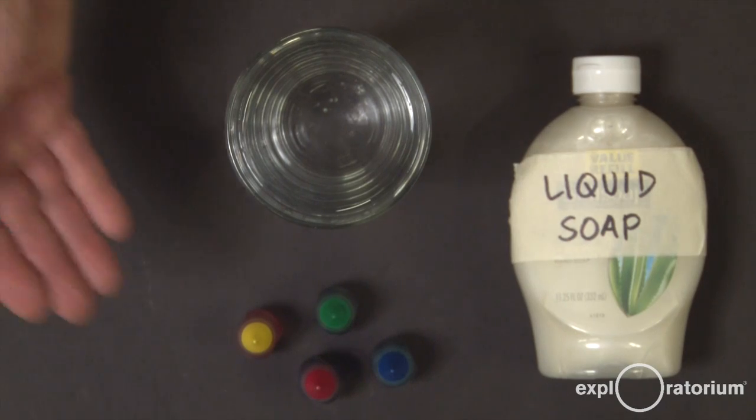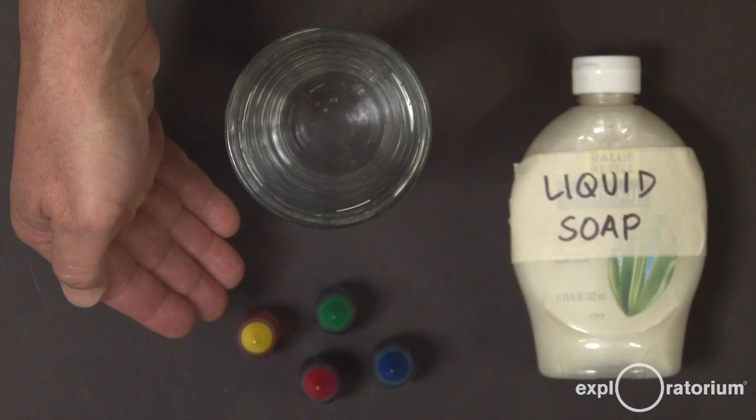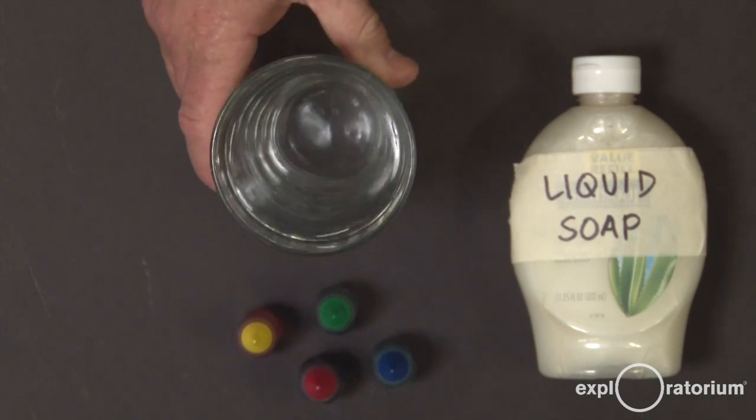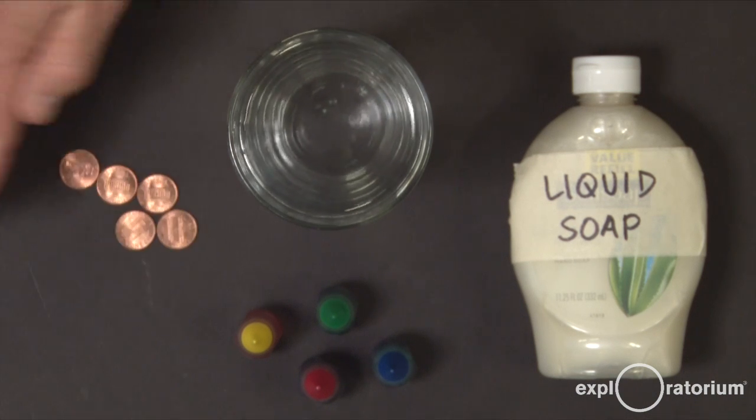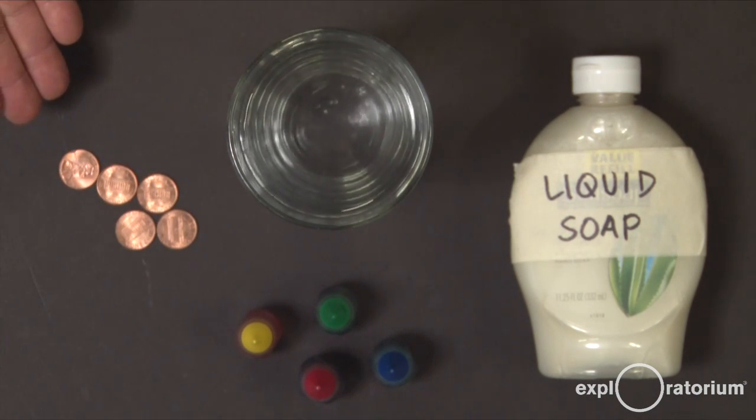The materials you're going to need in order to do this are an assortment of water-based food colors, a source of water like from the sink, and if you got them, some coins, five or six of the same denomination would work great.